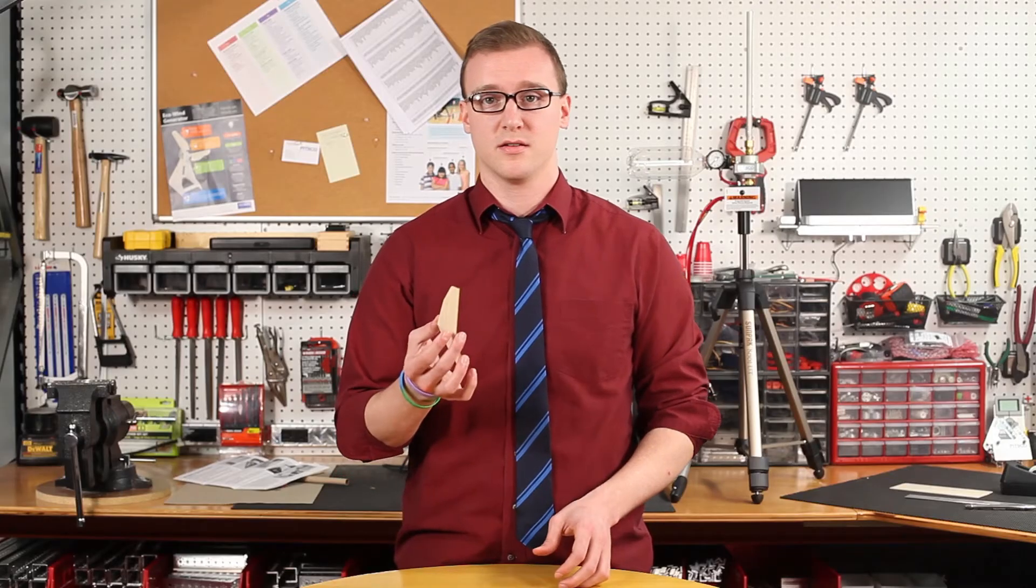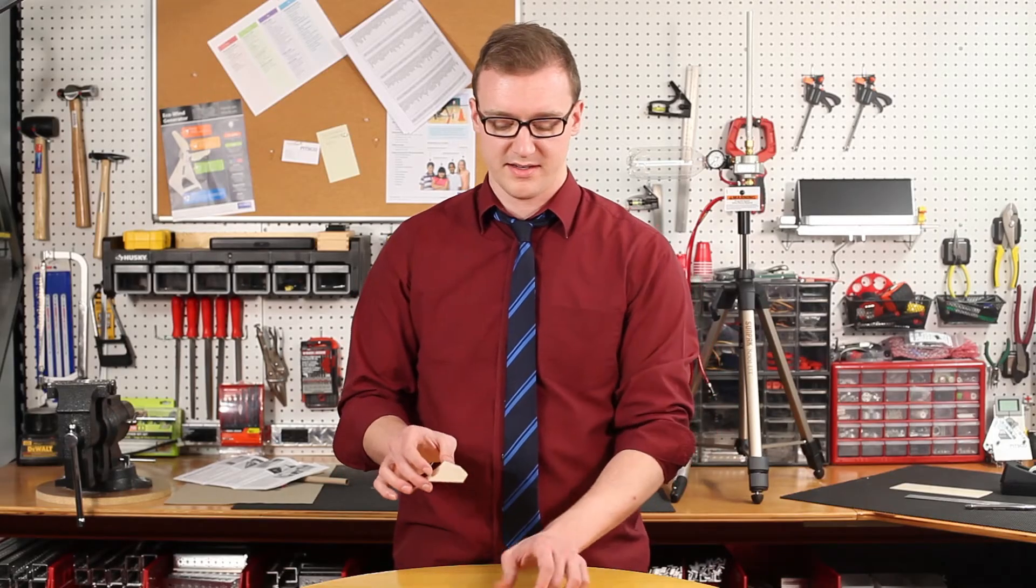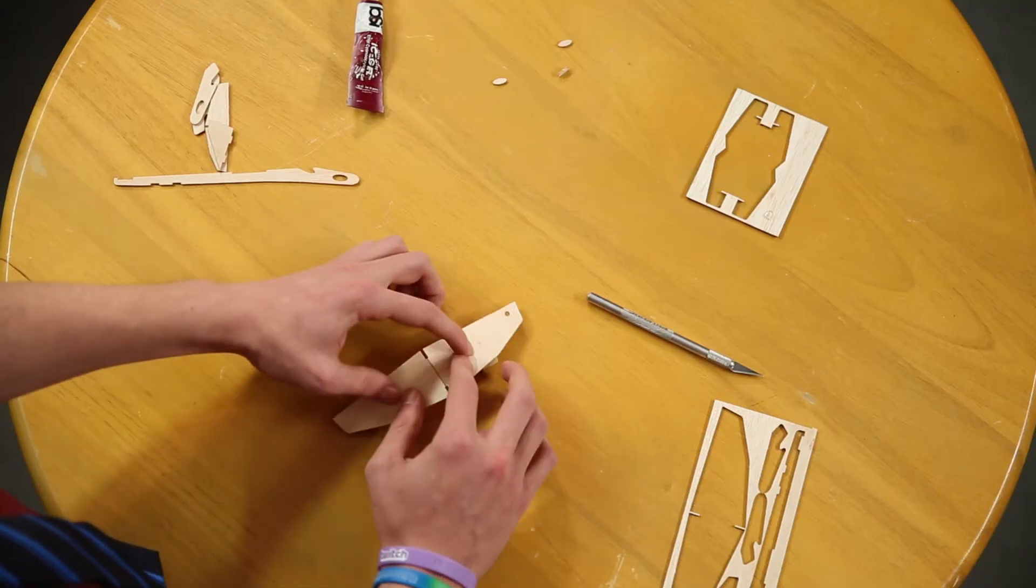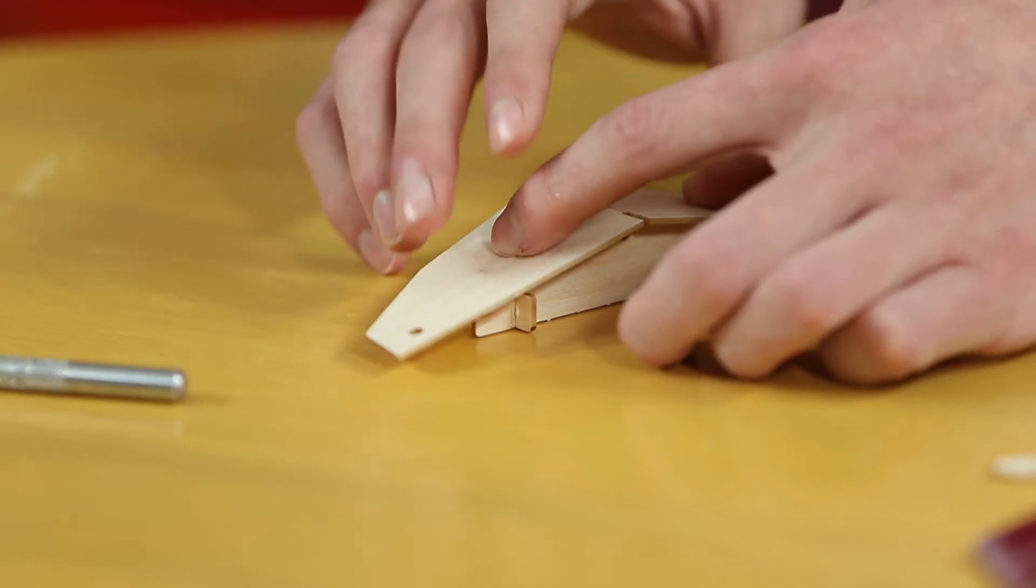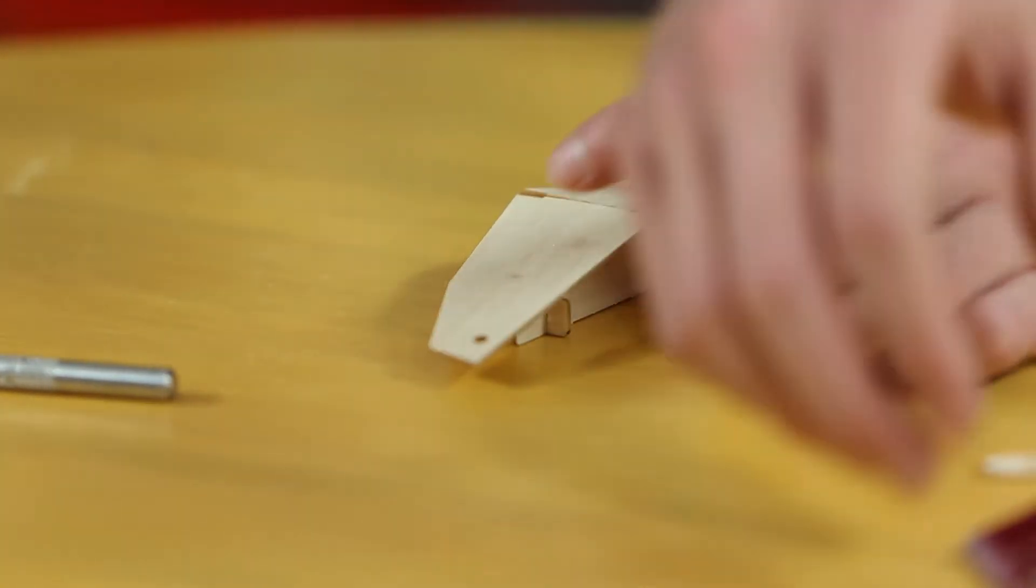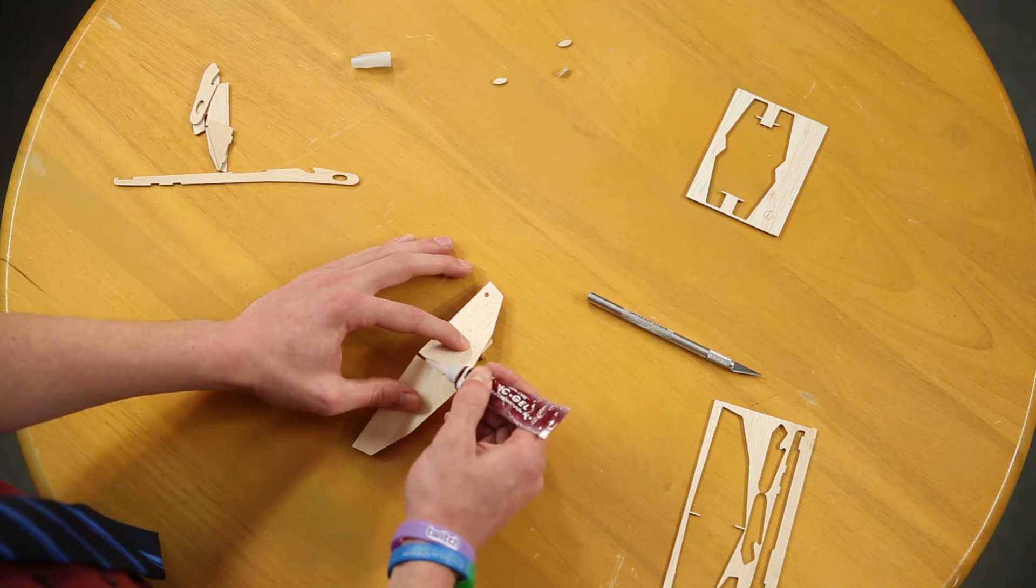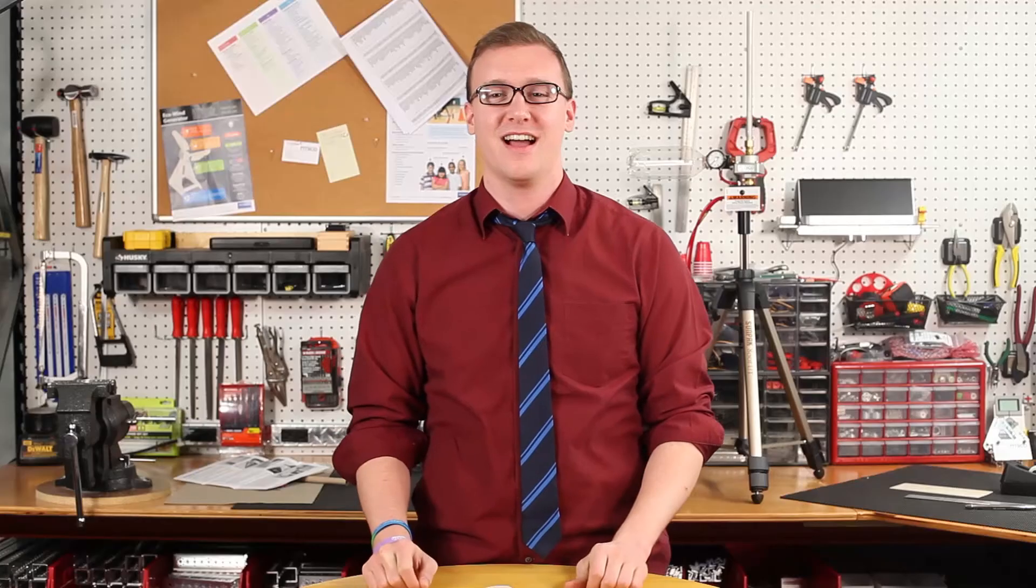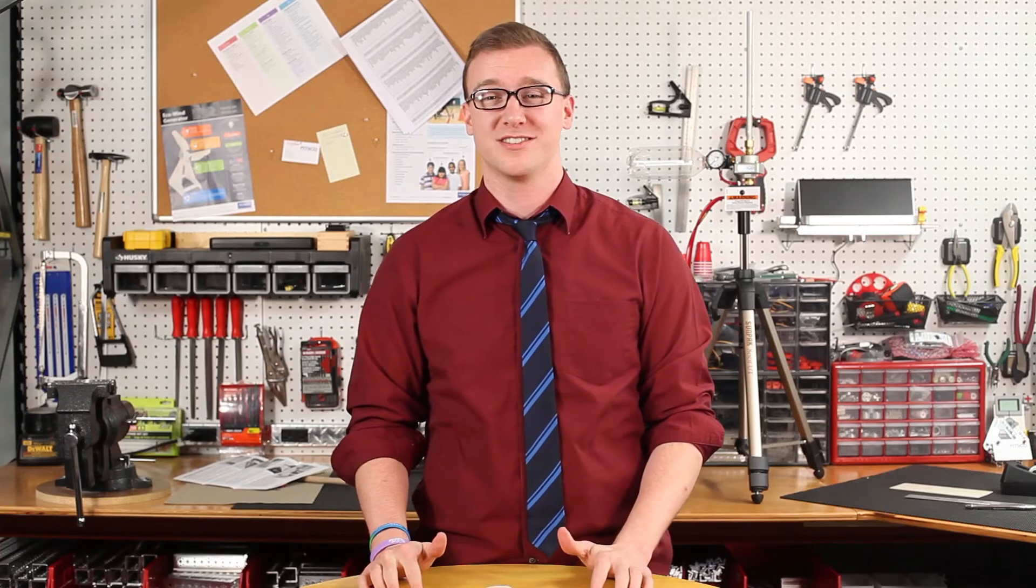Then you want to take the glider and you want to place it on top of the winged dihedral gauge. So the point of the winged dihedral gauge is to get the proper angle for the wings. After you've placed it on top of the winged dihedral gauge, you're going to want to place the line of glue along that line that you cracked into the wing and it's going to set that angle basically to where it won't move. After gluing the line, give it a moment to dry.